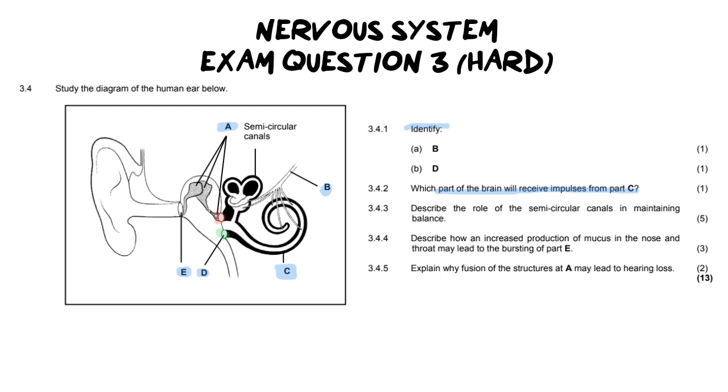Now, for question three, it says, describe the role of the semicircular canals in maintaining balance. Remember, whenever we see a describe question, we're saying how it happens, where it happens, when it happens and why it happens. This is for five marks, which means it requires a lot of detail in the answer. I actually have notes on this for those of you who are members, and I've given you the perfect answer that you can learn off by heart to provide for this in the exam.